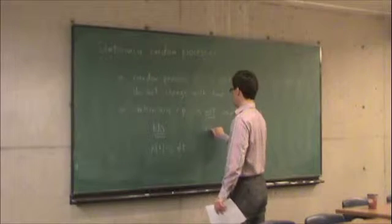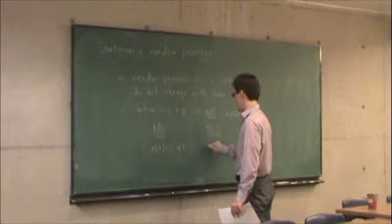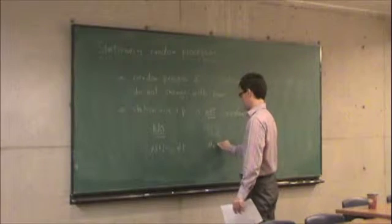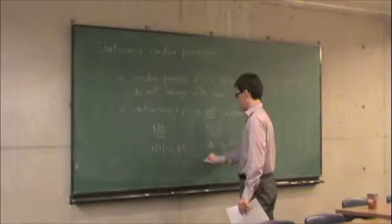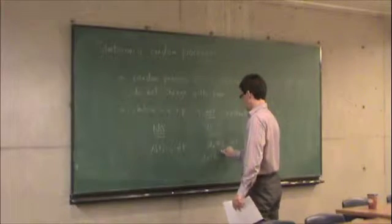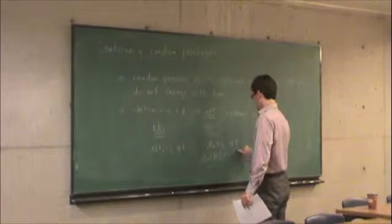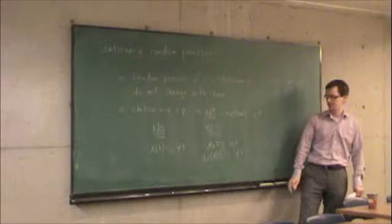What it does mean is that, for instance, the mean of x is constant for all t, and the variance of x is constant for all t. But it doesn't mean that the random process itself is constant.